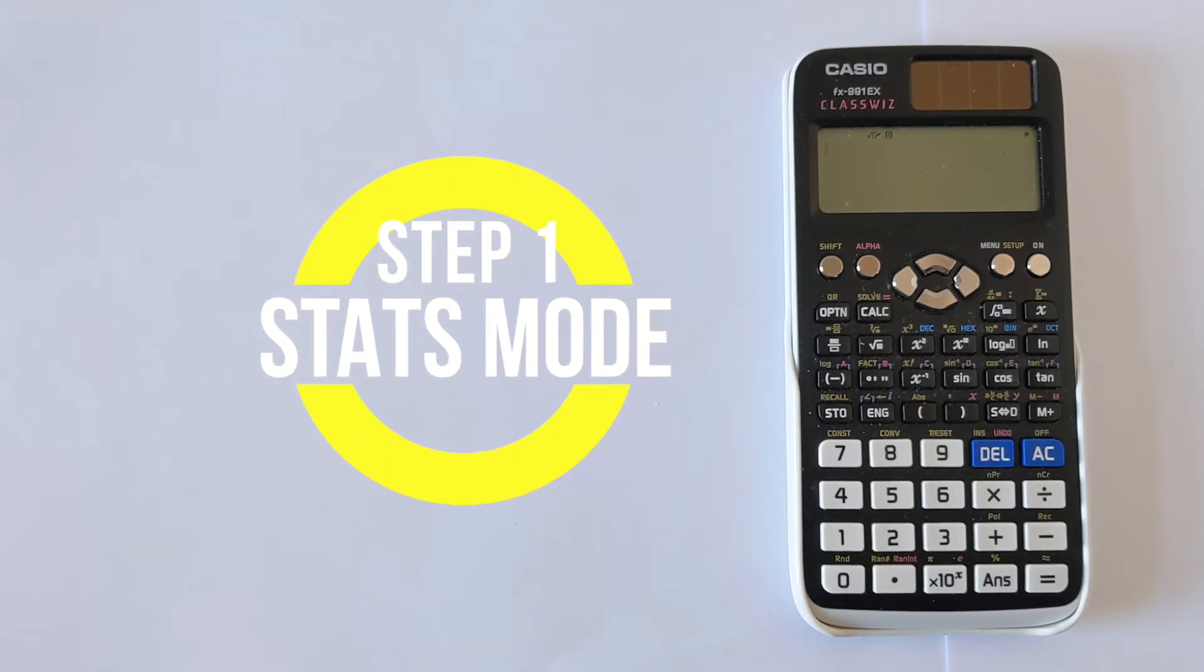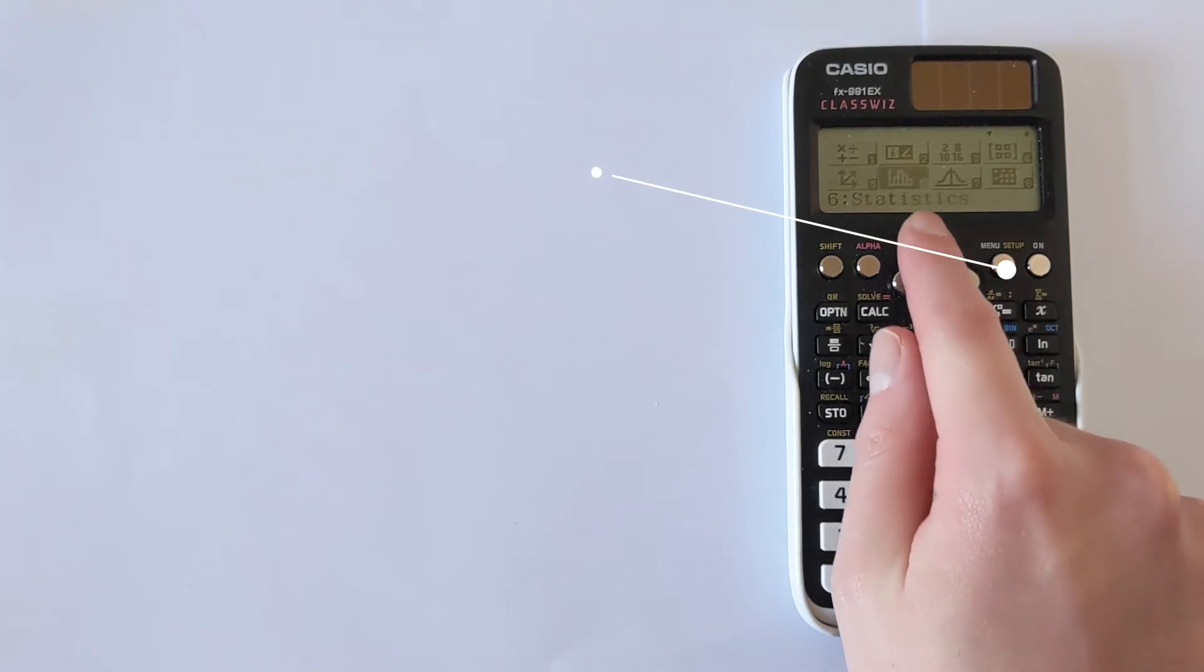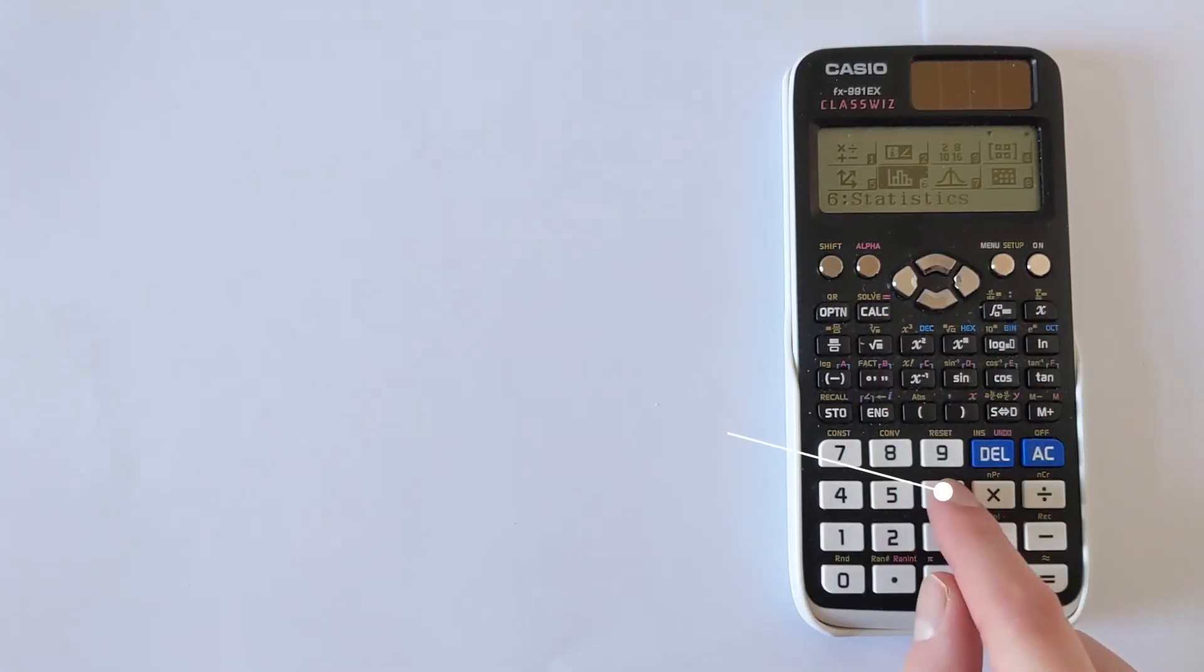The first step in doing this is slightly strange. We're going to put the calculator into statistics mode. So we're going to press the menu button, then we're going to navigate to where it says statistics. So we're going to choose option 6.